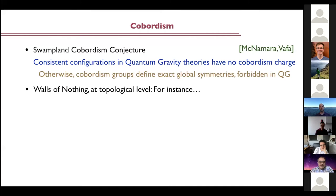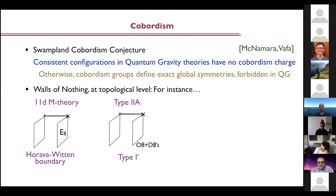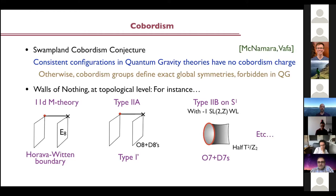About walls of nothing — I don't mean dynamical bubbles that can be generated; it's simply at the topological level. For instance, in 11-dimensional M-theory you can add a Hořava-Witten boundary with degrees of freedom — it's a location where spacetime ends. Similarly for Type IIA you can add orientifold eight-planes and D8-branes, giving half of Type I prime theory, which corresponds to a boundary where Type IIA can end. In compactifications you can compactify Type IIB on a circle and put an SL(2,Z) Wilson line which is minus one in SL(2,Z), ending that configuration with a boundary — a disk — with orientifold seven-planes and D7-branes.